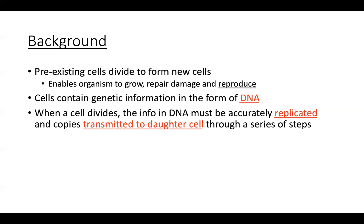Cells contain genetic information in the form of DNA, which is contained in the nucleus of the cell. When a cell divides and creates a new daughter cell, it must go through a process of duplicating or replicating its genetic material so that it can transmit a set of genetic information to that daughter cell. We'll look at the series of steps involved in a cell going from one cell to being divided into two cells. We use the terms parent cell and daughter cell.